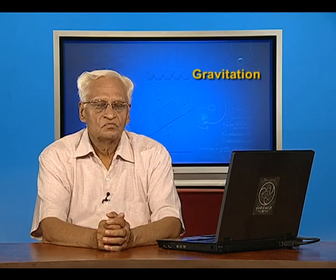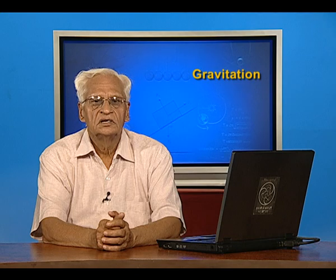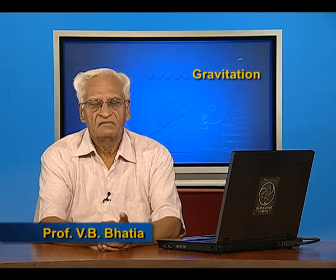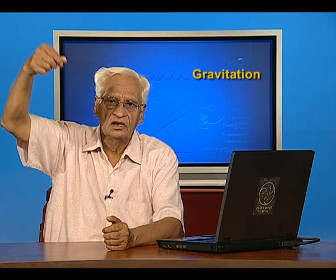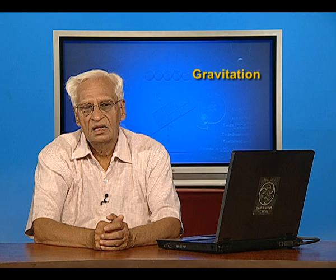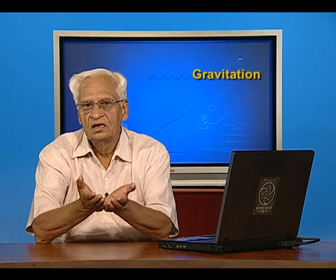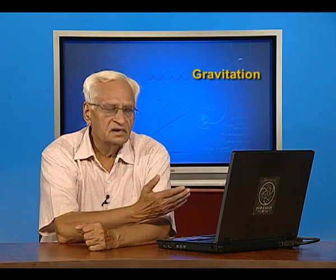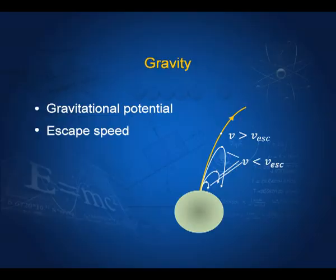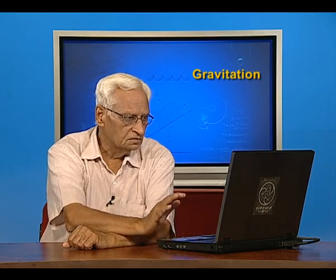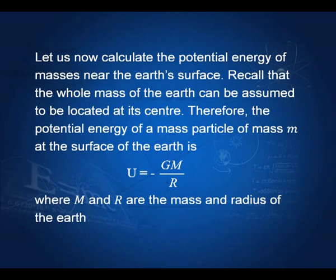In the last lecture we discussed the variation of small g, the acceleration due to gravity, when we go out into space or deep into the earth. We also discussed gravitational potential and gravitational potential energy. We shall start again with gravitational potential and derive the expression for escape speed. The potential energy we already calculated for a unit mass is u equal to minus GM by r, where r is the radius of the earth.